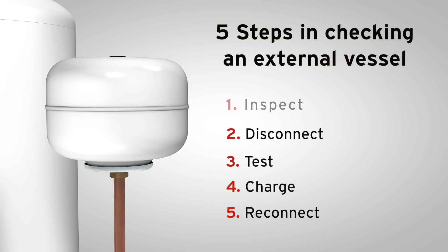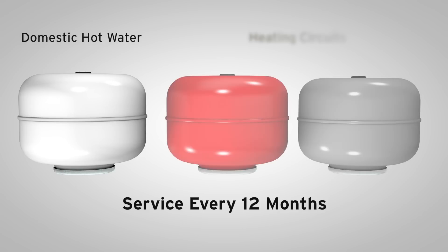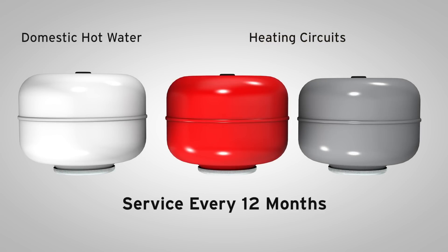Heating systems with unvented cylinders usually have two expansion vessels: a white one protecting the domestic hot water circuit and a red or grey one for the heating circuits. It is important that these are checked and serviced every 12 months.